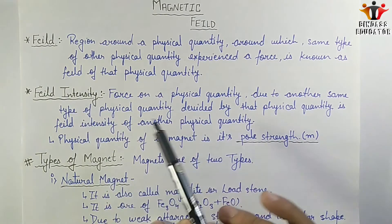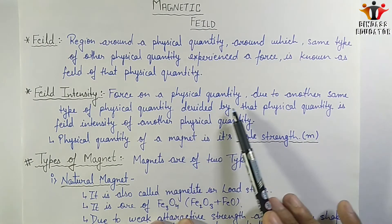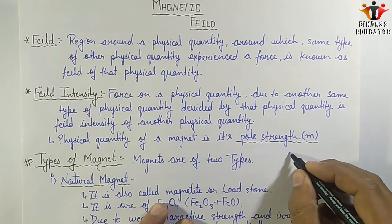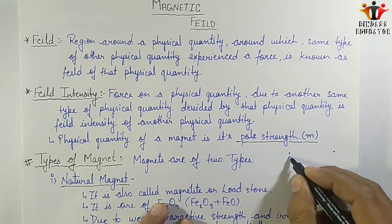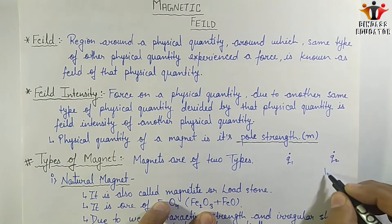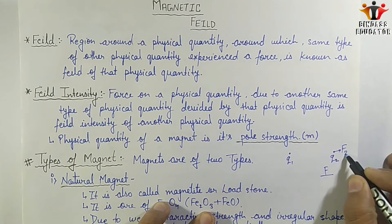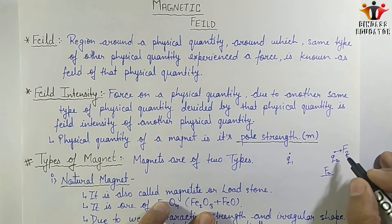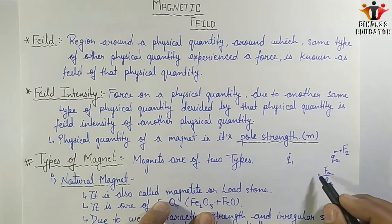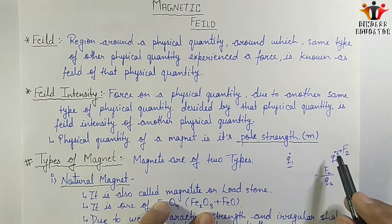The next term is field intensity. Field intensity is defined as the force on a physical quantity due to another physical quantity of the same type, divided by that physical quantity itself. For example, if we have charges Q1 and Q2, the field intensity of Q1 is the force on Q2 divided by Q2. That is the meaning of field intensity.